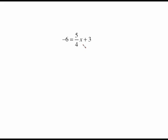Same idea. Switching the variable over to the right side is still a matter of I need to undo this plus 3. So subtract 3 from both sides. Those cancel and we have negative 9 equals 5 fourths x. That is a fraction coefficient. Let's undo that by multiplying by the reciprocal of that coefficient which is 4 fifths on both sides.